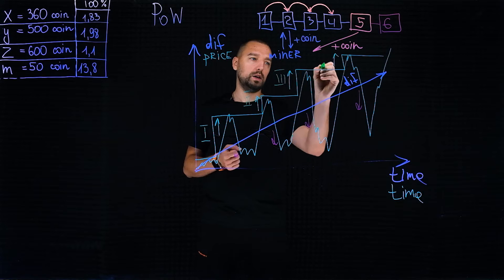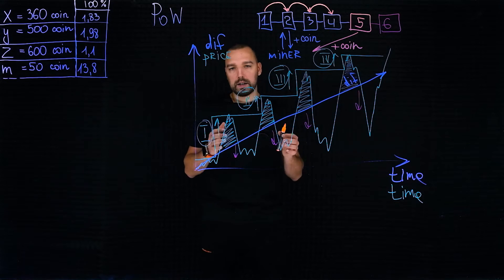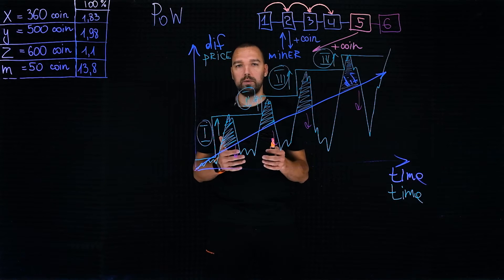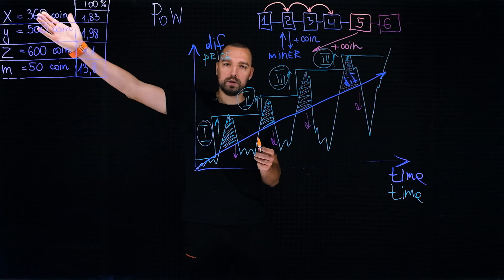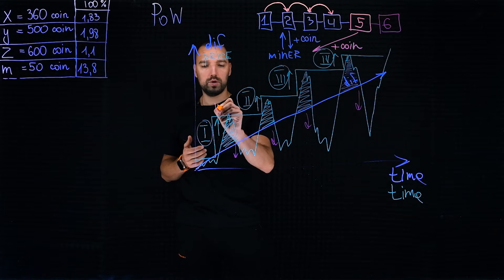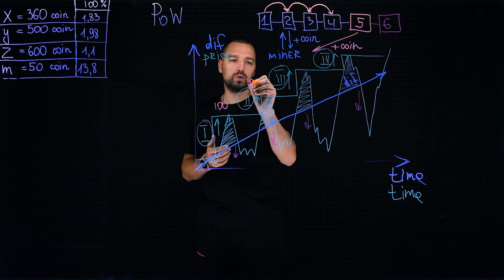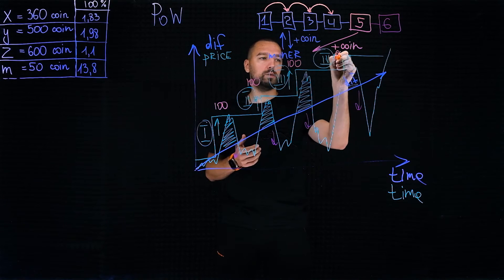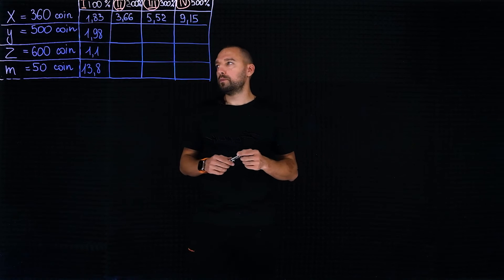In the previous video we considered that in the X project we divided the portfolio into four orders: the first order is 100 coins, the second order is 100 coins, the third order is 100 coins, and the fourth order is 60 coins. Let's transfer all this to the table.